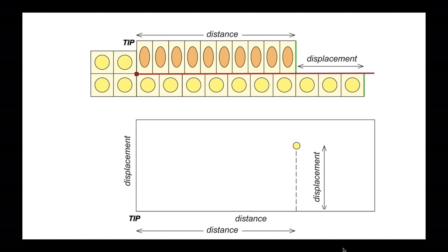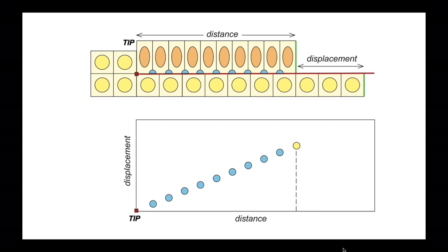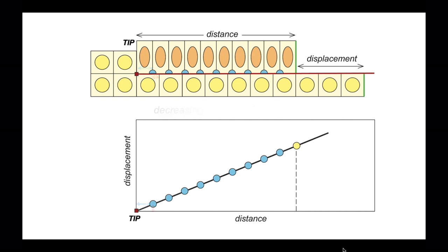We can do the same for various other points across our model. Here are various points in the hanging wall to our fault — they've all been offset — and we can plot them onto the graph. We can see there's a relationship: at close distances to the tip, there's very low displacement. This diagram shows the decrease in slip towards the tip of the thrust.